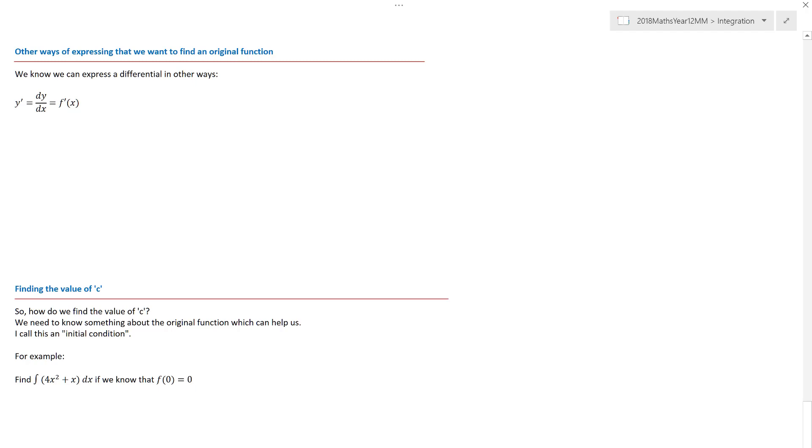Other ways of expressing that we want to find the original function. Remember, we can express things in terms of y dashed equals, dy by dx equals, or f dashed of x equals. So don't get confused. If the question says dy by dx is 3x squared, find y. All it's asking you to do is that you're going to get y by integrating 3x squared with respect to x.